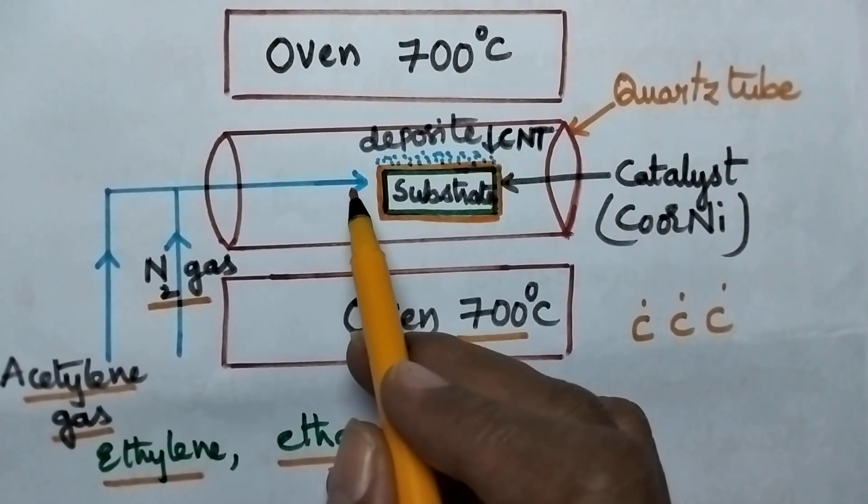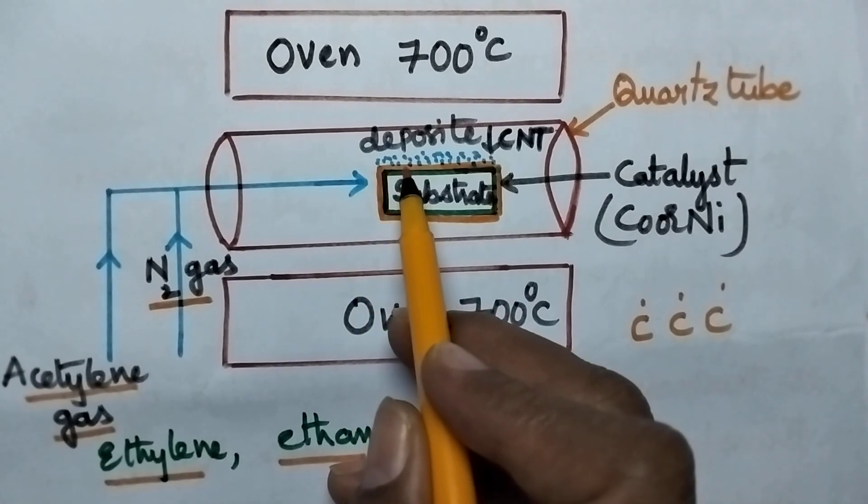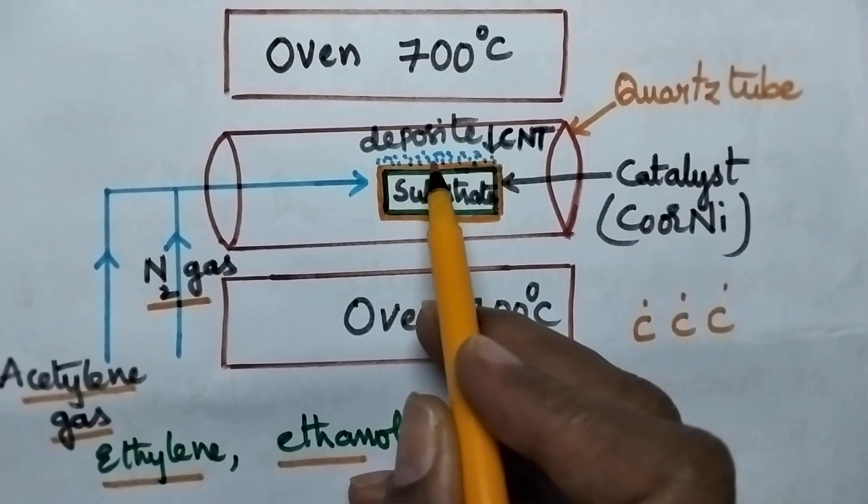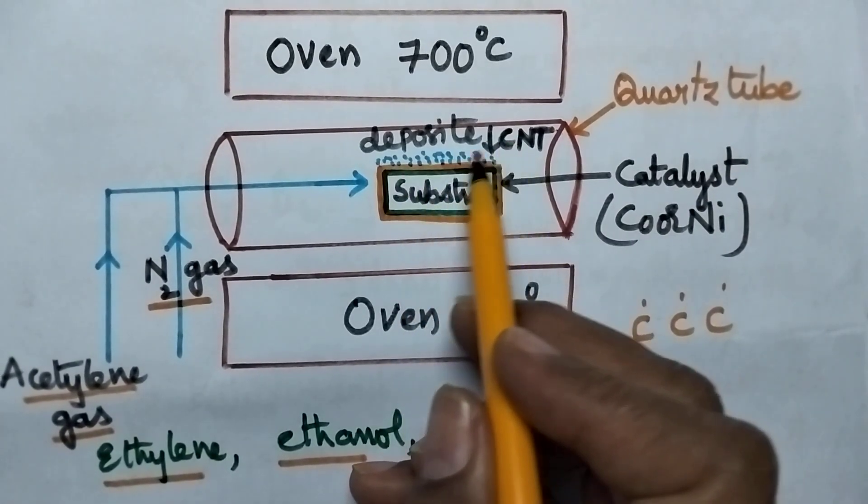These carbon atoms slowly travel towards the substrate and get deposited on the substrate, and these carbon particles have nano dimensions.